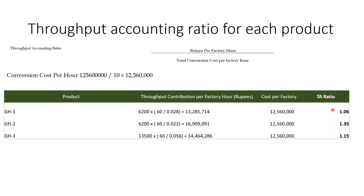From the TA ratios, among the three products, the one that gives the highest contribution/earning is GH2 with a TA ratio of 1.35. This concludes today's lecture. Some cases on throughput in the service industry remain to be discussed. I'm sure the concepts are now clear. Handouts and questions will be shared soon. Thank you — Assalamu Alaikum Warahmatullahi.